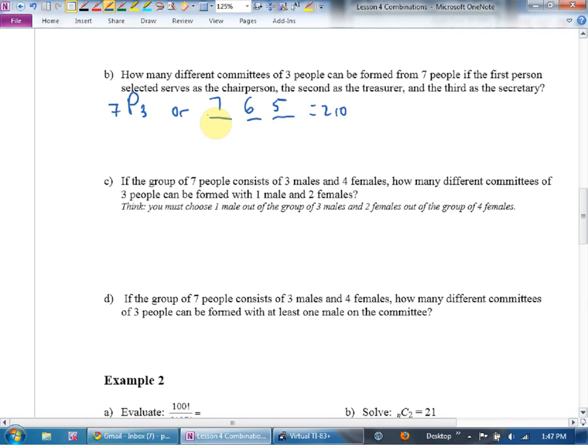I like C. If the group of seven people consists of three males and four females, so now we've got subgroups, how many different committees of three people can be formed if you want one male and two females? Looks tough, but surprisingly easy if I give you one more tool. The best tool I can give you for combinations is to draw a bucket.